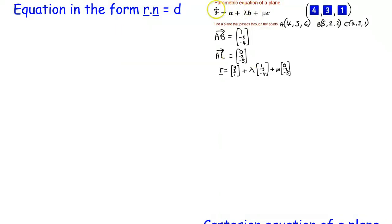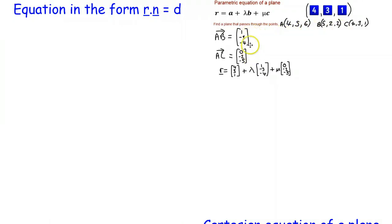Last time we had a look at finding the parametric equation of a plane, so we found an equation in that form. We used three points that we knew were on the plane and used those points to find two direction vectors — two non-parallel direction vectors — and that allowed us to write our parametric equation of the plane using a point on the plane and the two direction vectors.